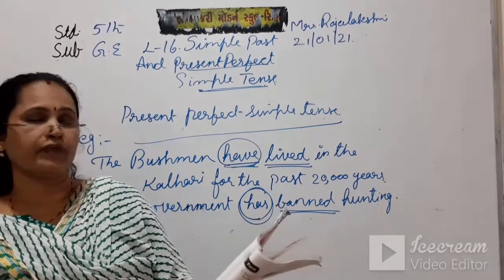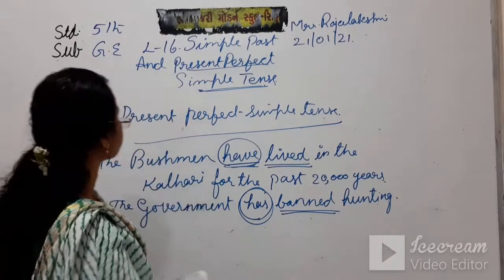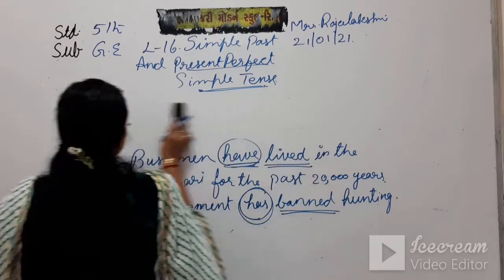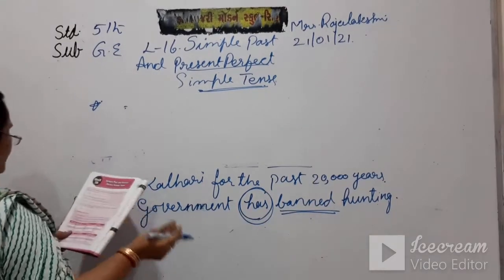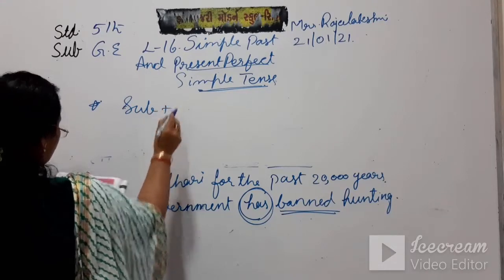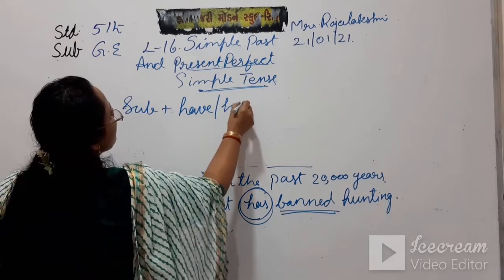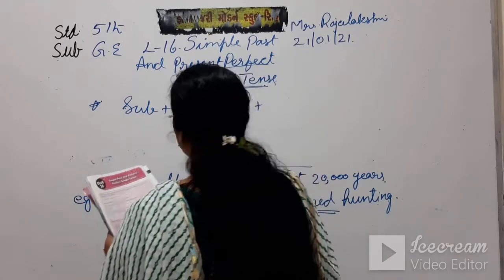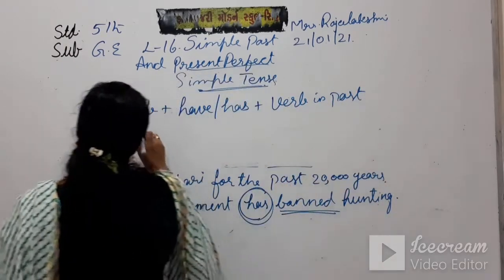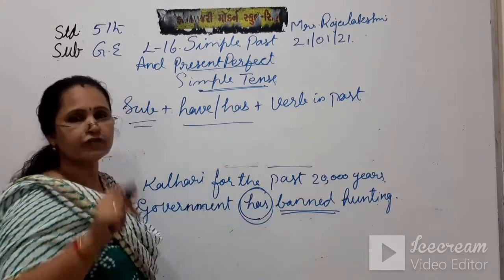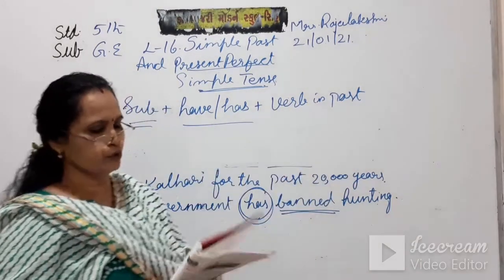Now, to make a sentence using Present Perfect Simple, we use: Subject + have or has + word in the past participle form. Have is used with plural subjects; has is used with singular subjects. The past tense form of the word — its past participle form — is used in this structure.